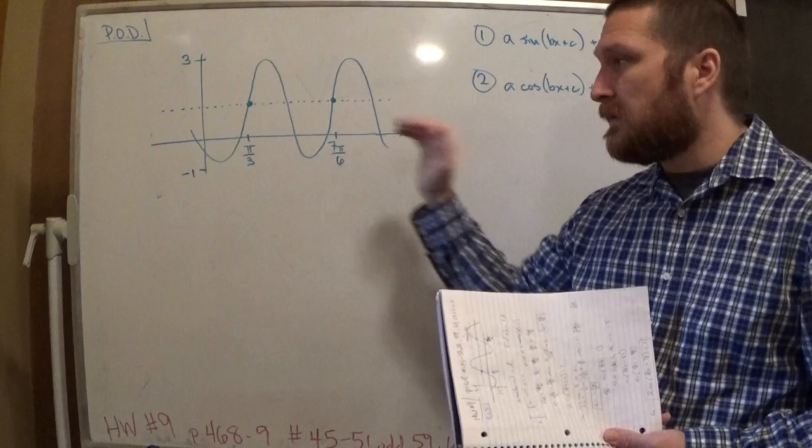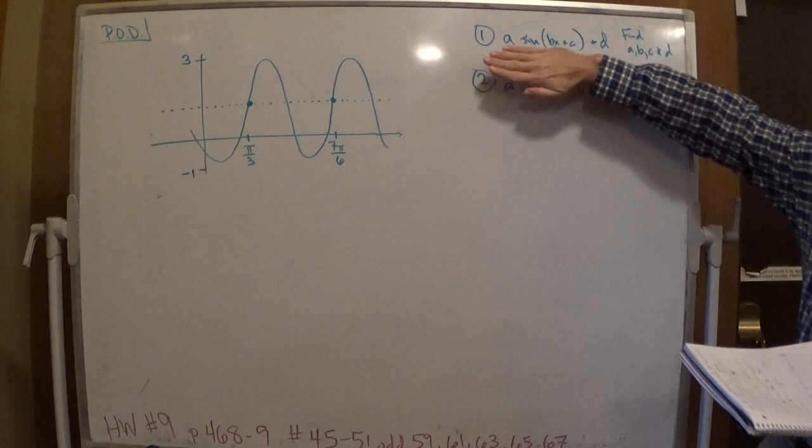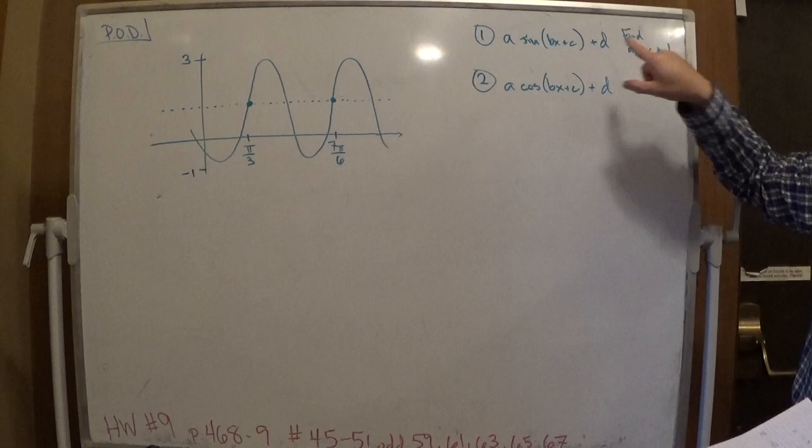So let's go ahead and talk about this. I've drawn some stuff, and I said that this curve can be written — in this case we have two separate questions. The first one: I'm saying this could be written as some number times sine of some stuff plus another number, and the idea is to find what each of those numbers would be.